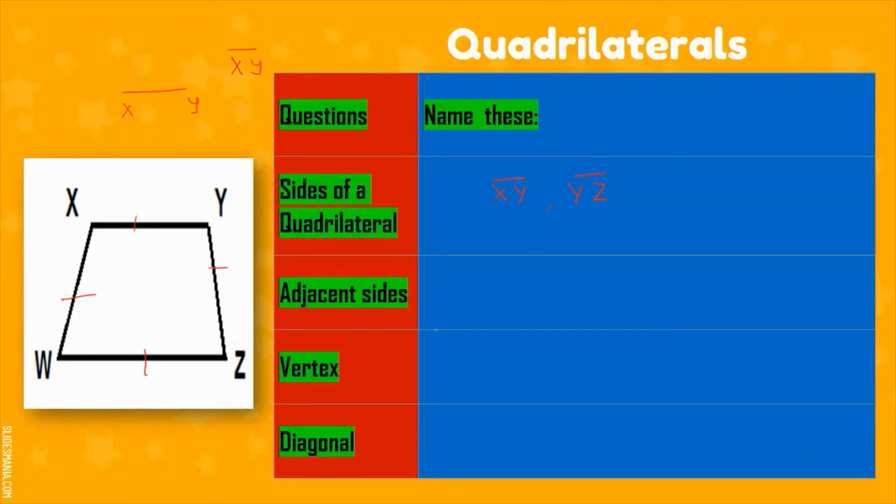Now we talk of adjacent sides. For adjacent sides there should be a common vertex. If there is a common vertex, that means this side is adjacent to this side. Yes, you're right. How do we write it? We write XY and comma YZ. So this is an example of adjacent sides. Can you find some more examples of adjacent sides here?